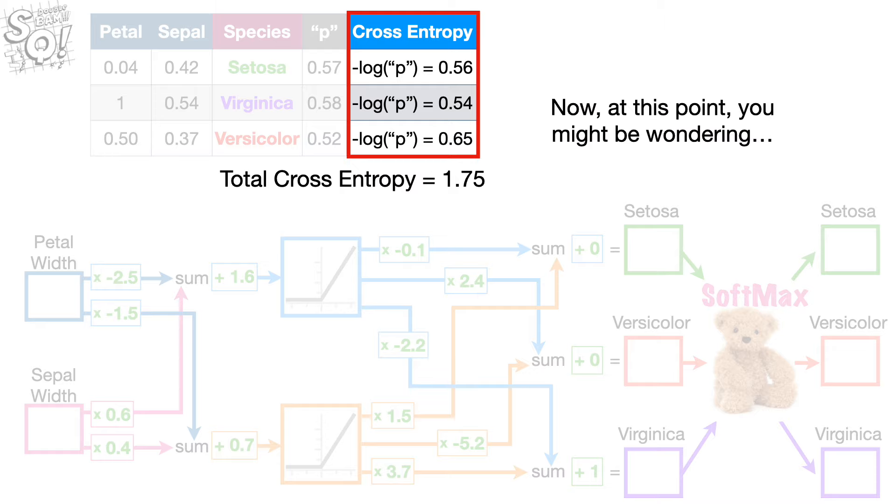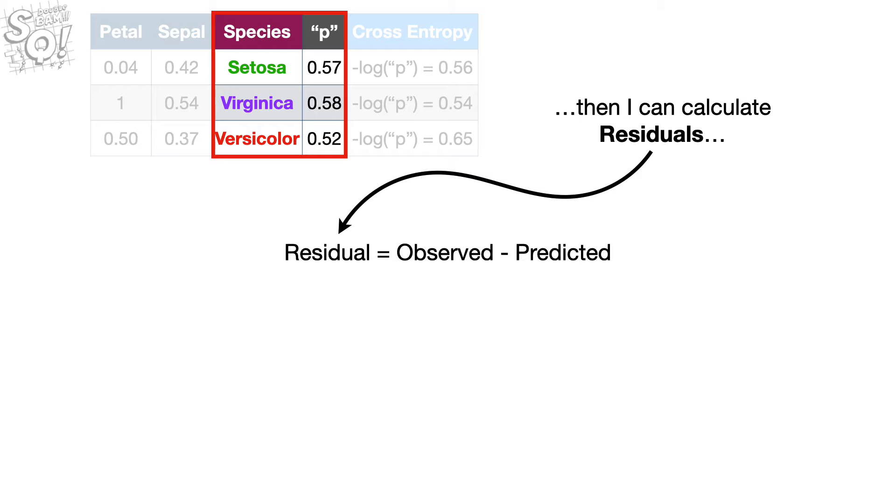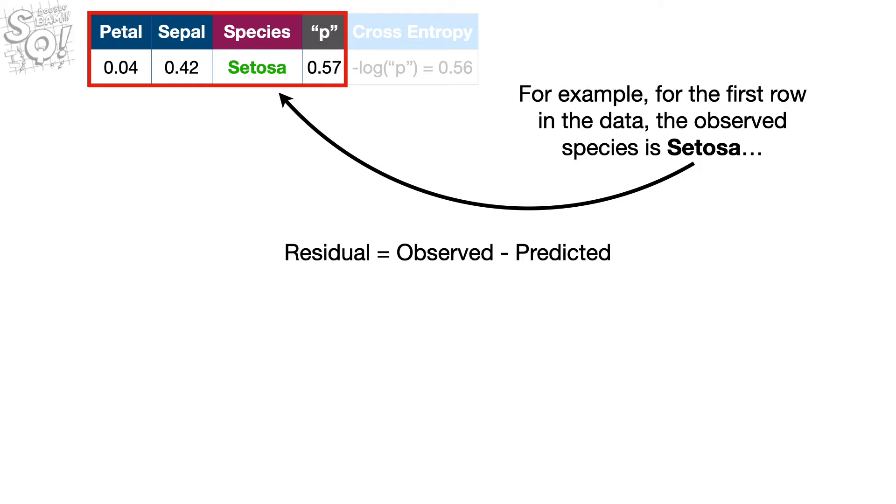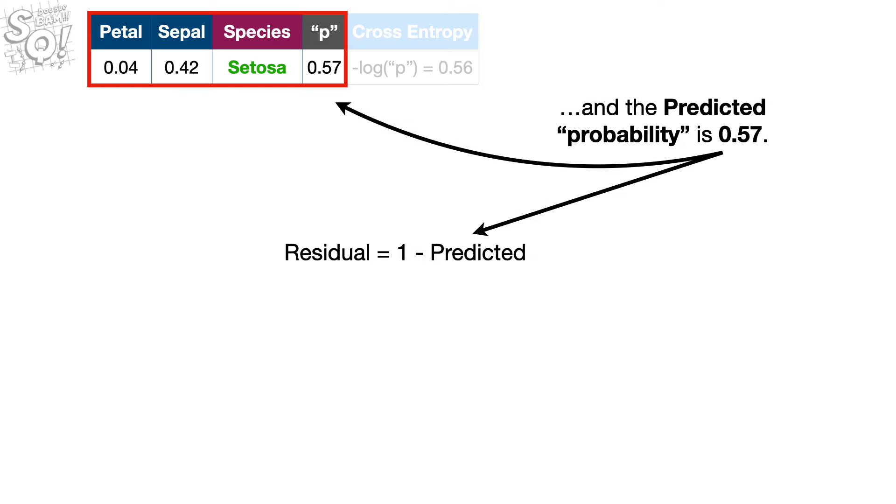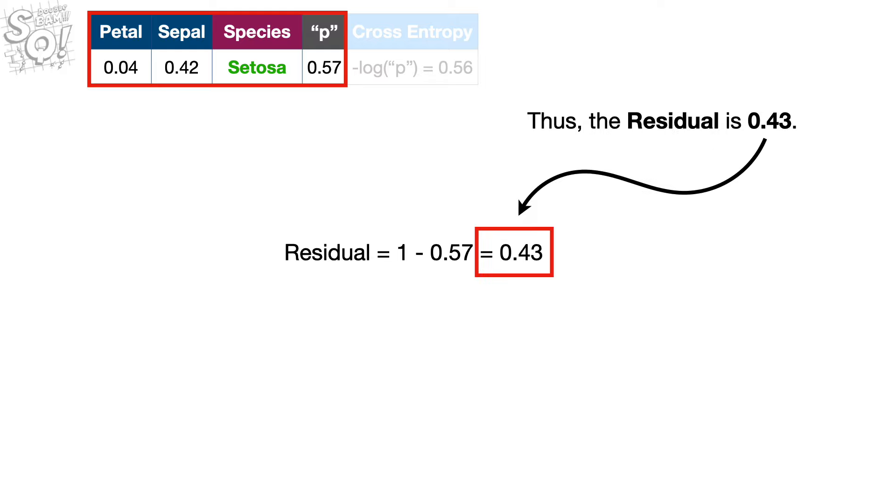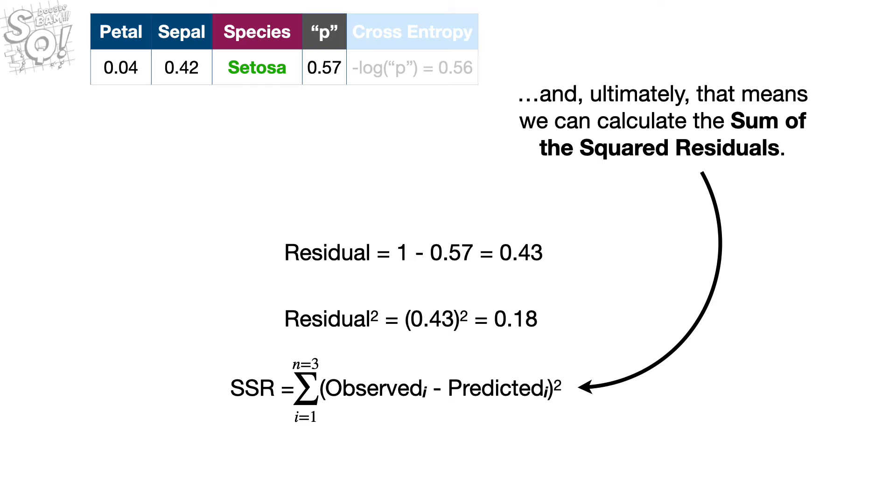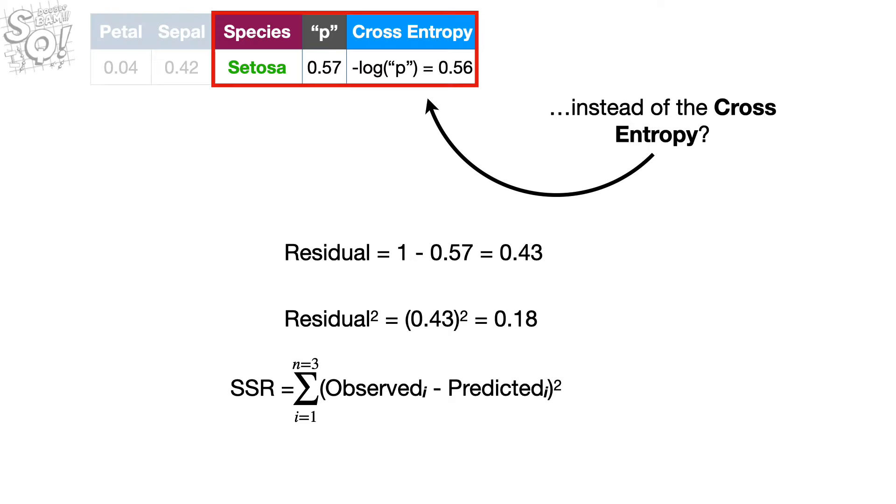Now, at this point, you might be wondering, if I can calculate these probabilities for each observed species, then I can calculate residuals, the difference between the observed probabilities and the predicted probabilities. For example, for the first row in the data, the observed species is setosa. And thus, the observed probability that the petal and sepal measurements came from setosa is 1. And the predicted probability is 0.57. Thus, the residual is 0.43. And if we can calculate a residual, we can square it. And ultimately, that means we can calculate the sum of the squared residuals. So, you may be wondering why we don't just calculate the squared residuals instead of the cross-entropy.